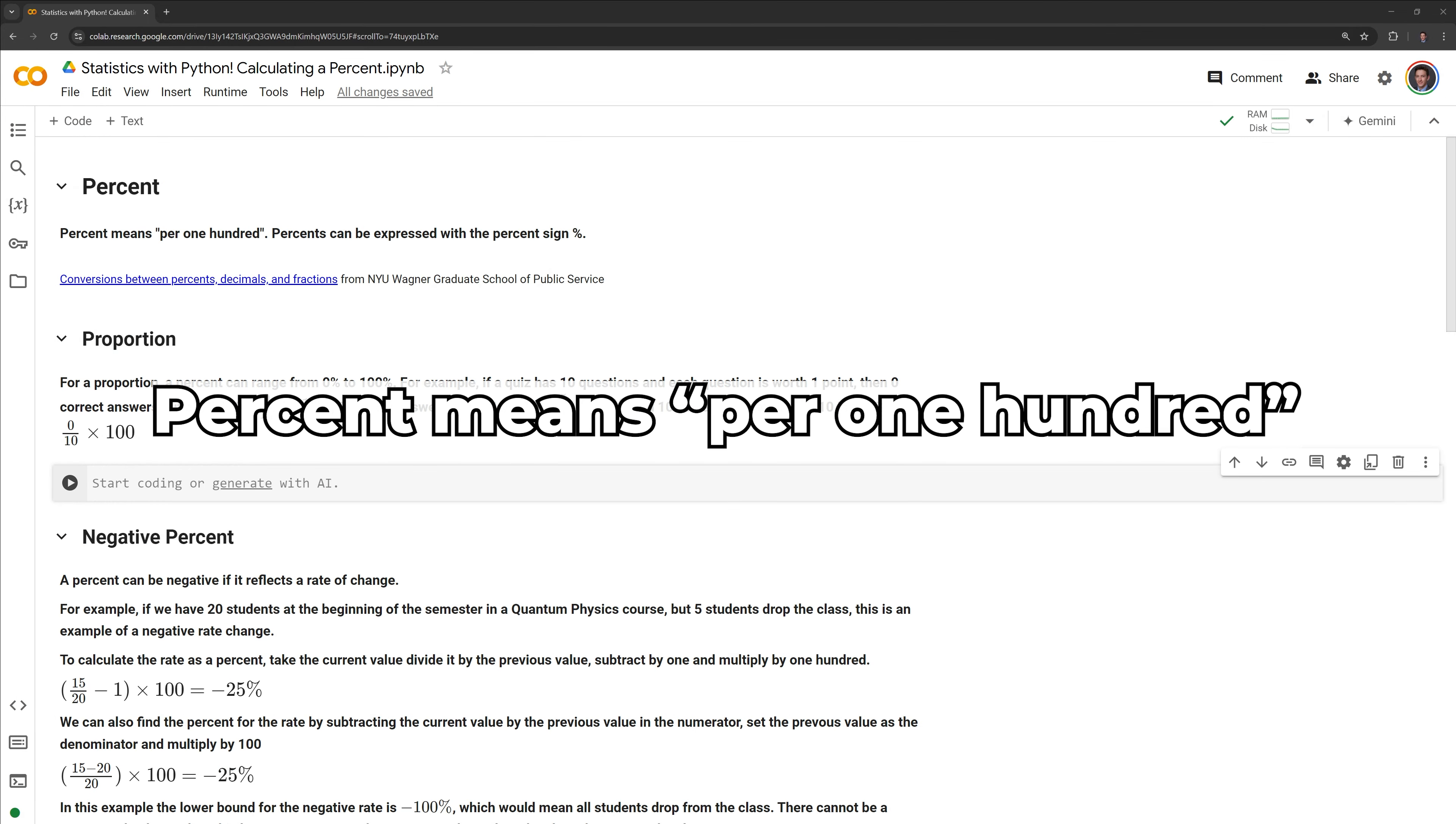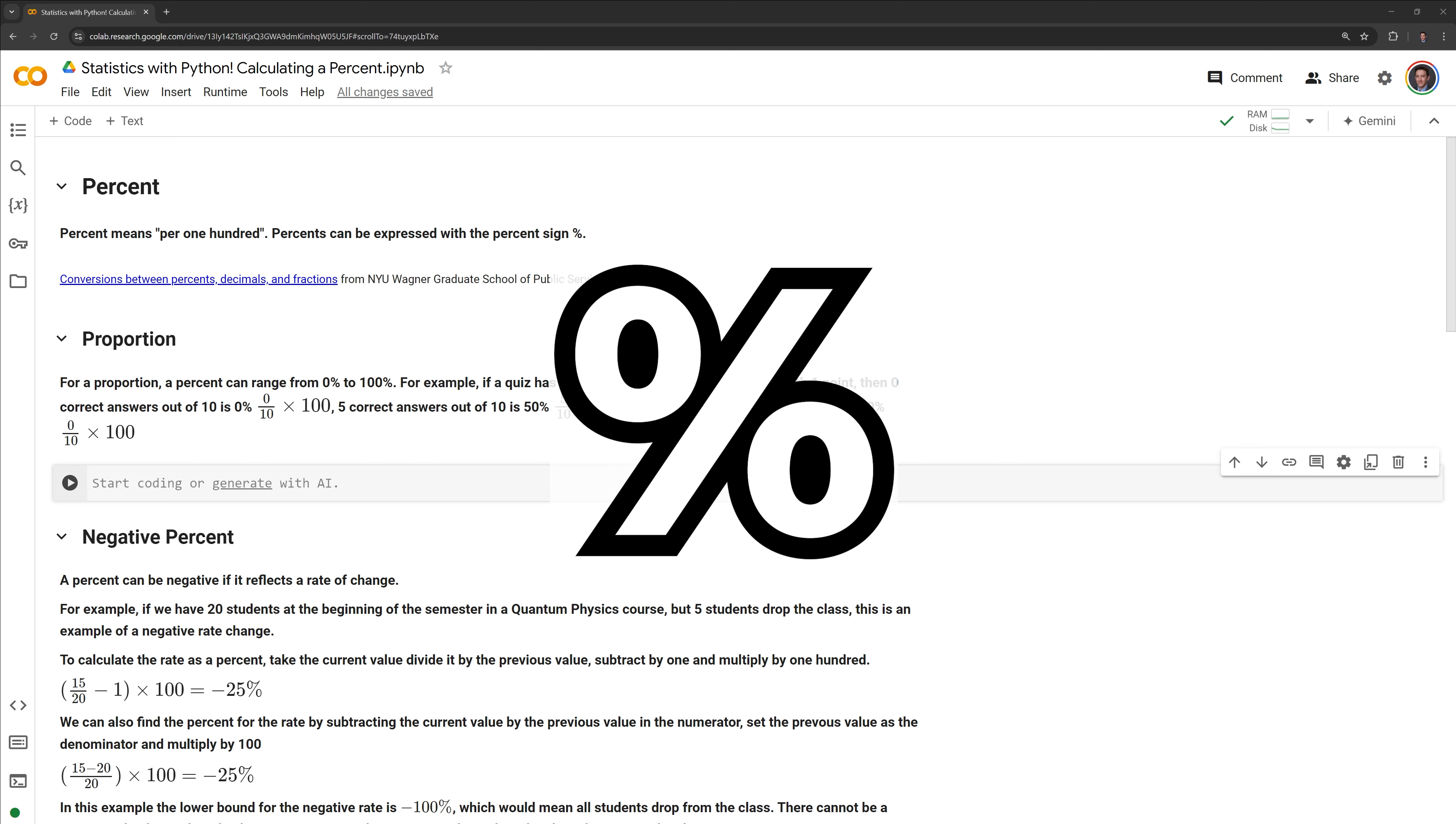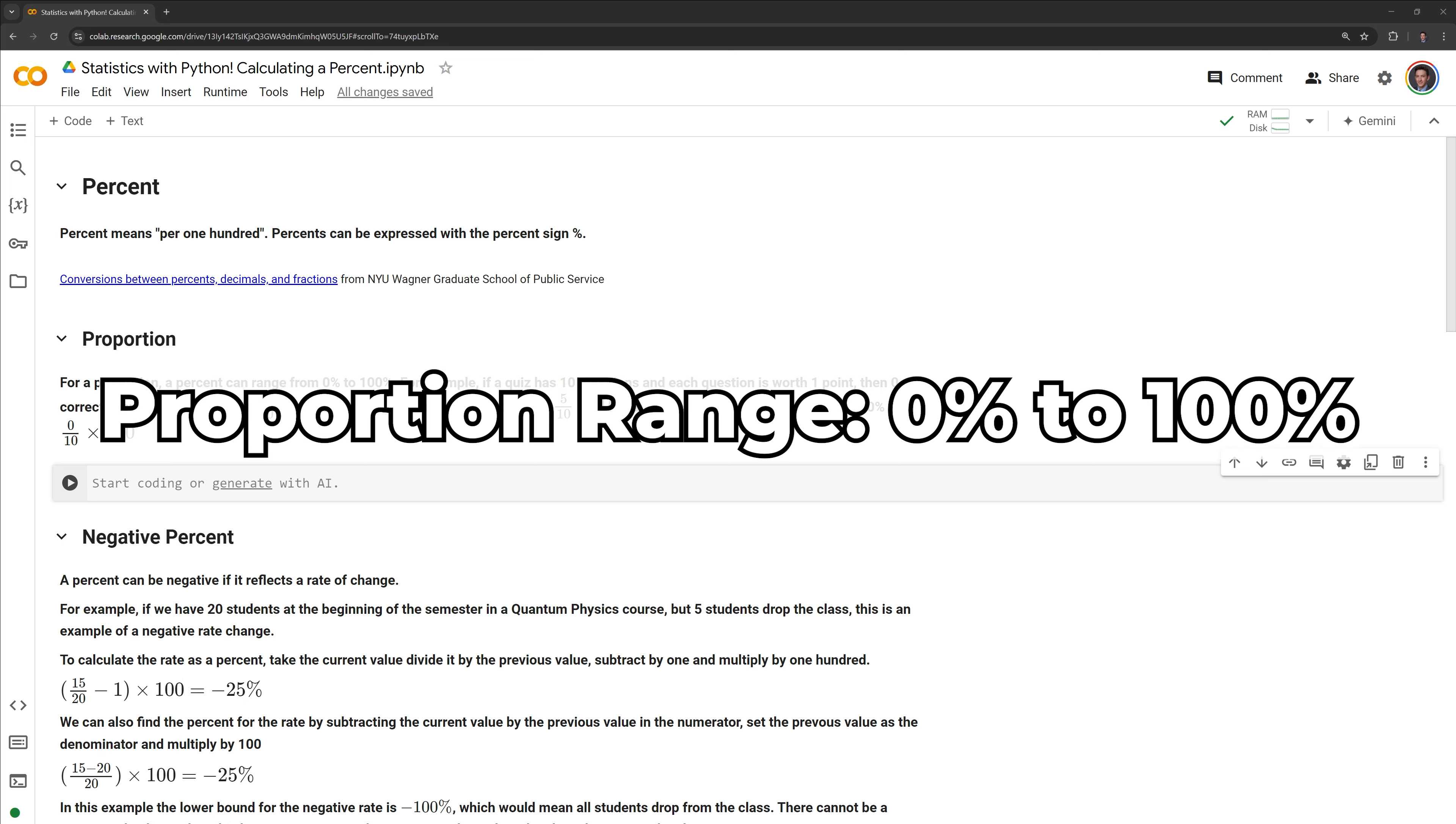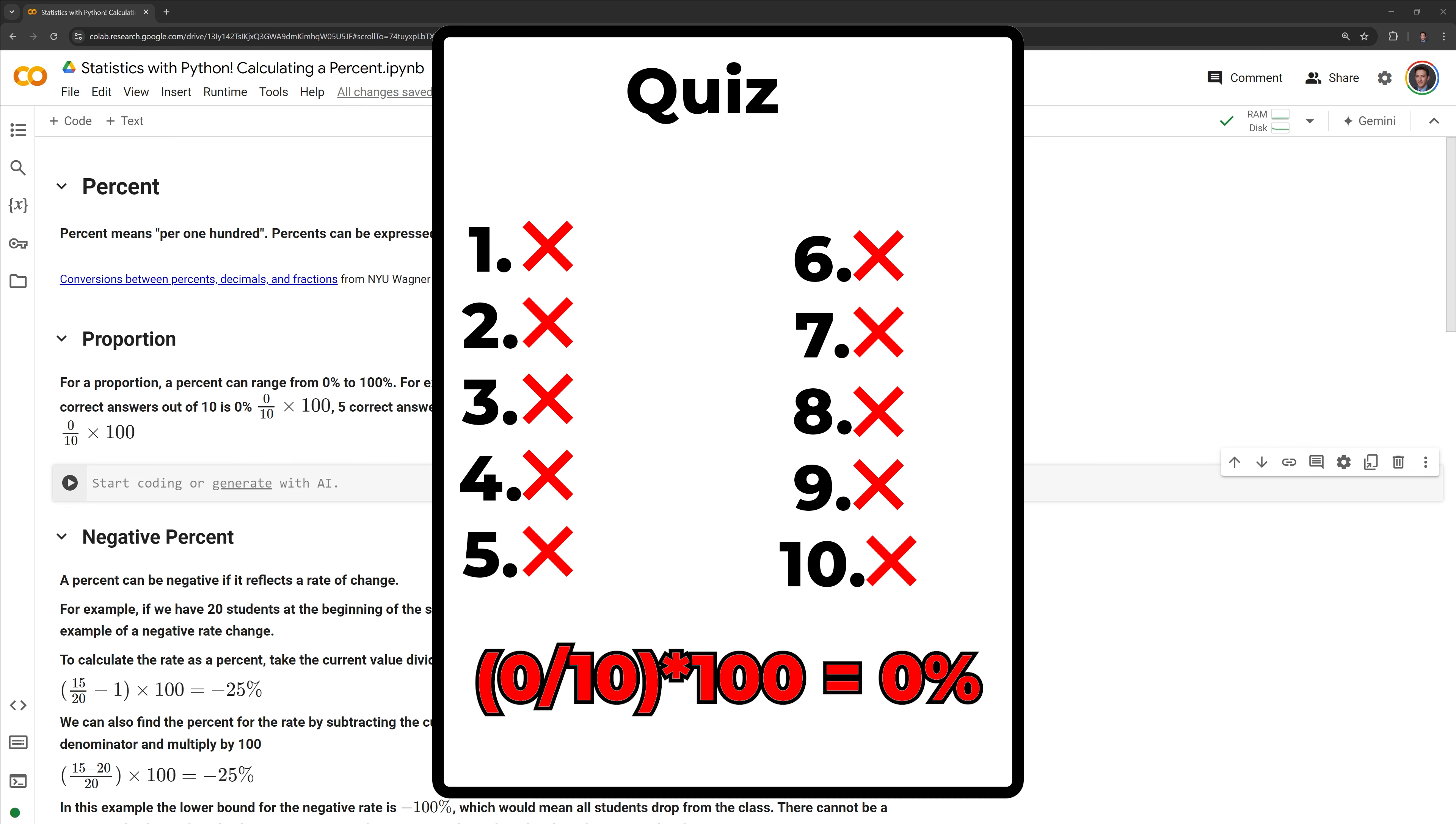First let us define a percent. Percent means per 100. Percents can be expressed with the percent sign. We will first calculate a percent in terms of a proportion. A proportion is a type of ratio that relates a part to a whole. For a proportion, a percent can range from 0% to 100%.